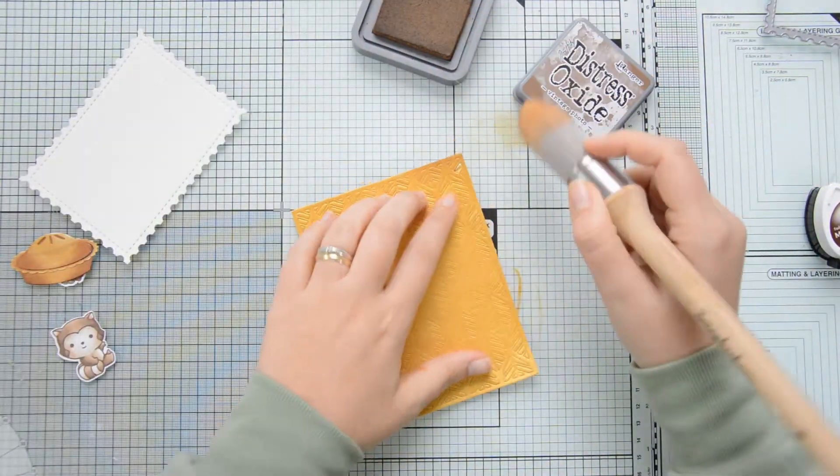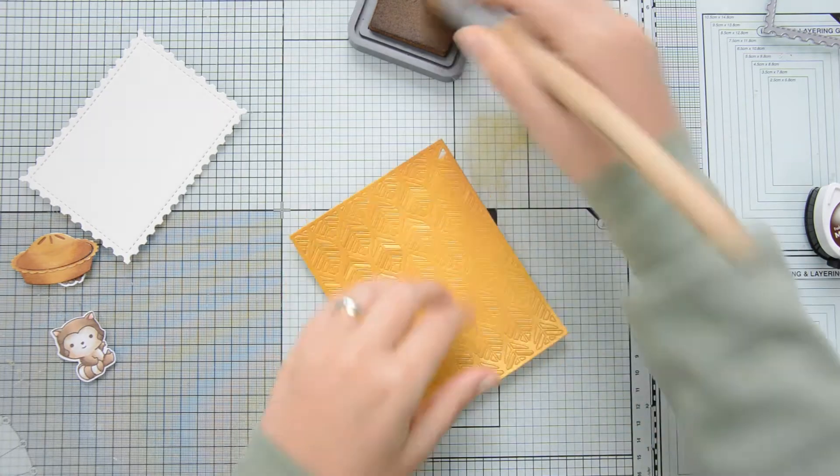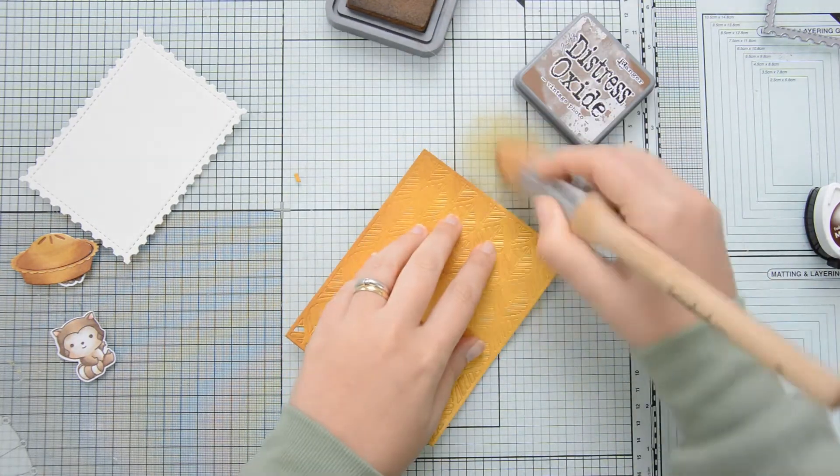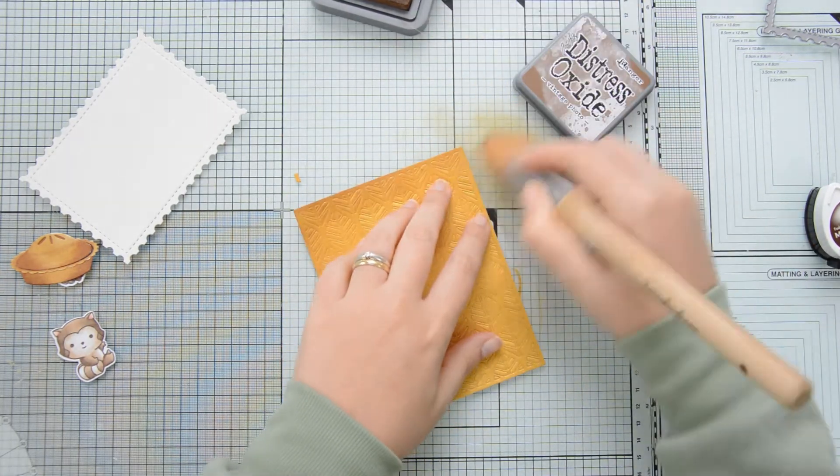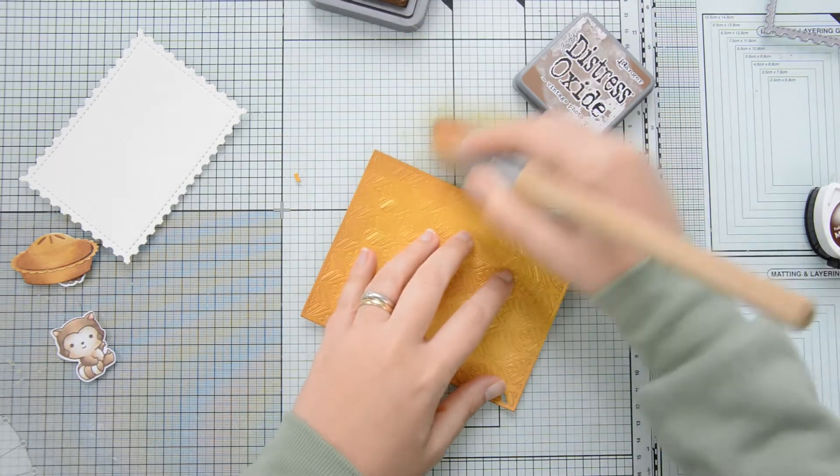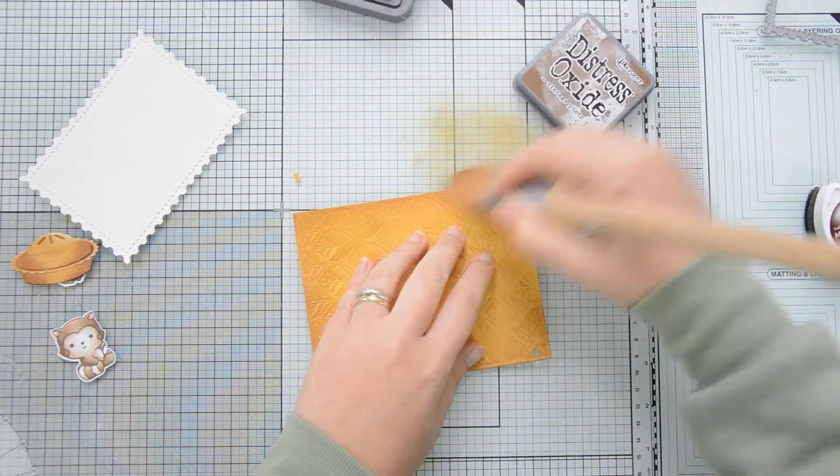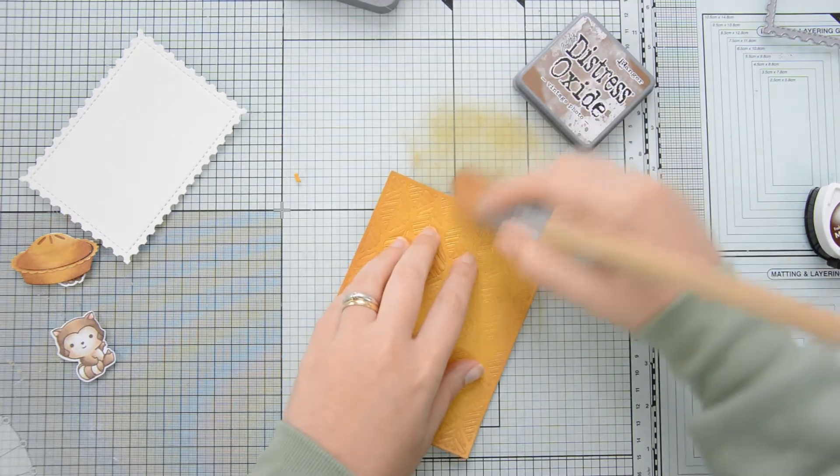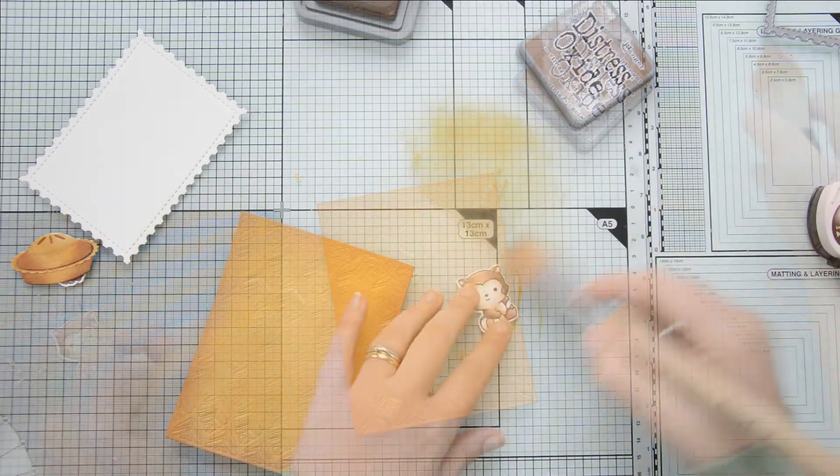In order to give a bit more of a vintage feel to this card I decided to use my distress oxide in vintage photo and a stencil brush and I brushed my oxides along the edges of the base panel and also around my images.